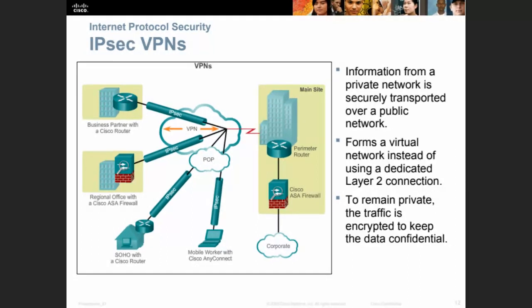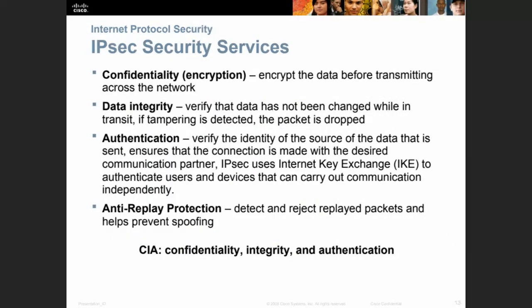You don't need to use a PPP connection and pay so much for subscription — you just use the Internet and install a good VPN. The different types of connections include: ASA firewall, SOHO with a Cisco router, Cisco AnyConnect for the mobile worker, business LAN-to-LAN with a business partner using a Cisco router, or a regional office with a Cisco ASA firewall. The firewall provides more features and protection — especially for banks. The characteristics and services of IPsec include: confidentiality by encryption (encrypting data before transmitting), integrity (verifying the data has not been tampered with — if tampering is detected, the packet is dropped), and authentication (verifying the identity of the source and ensuring the connection is made with the desired communication partner).